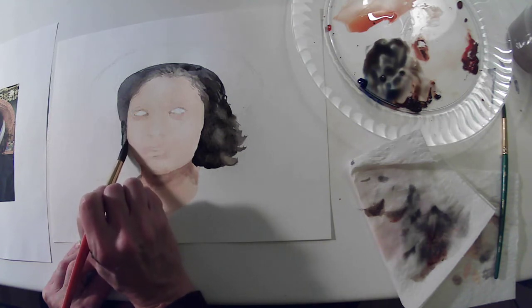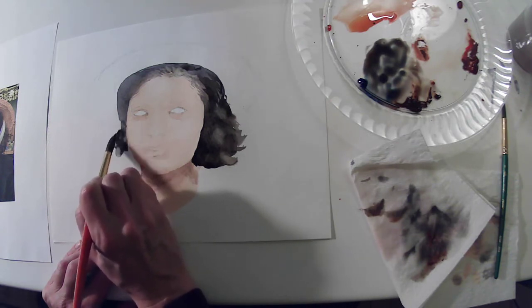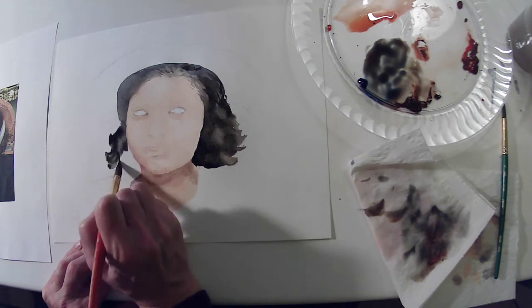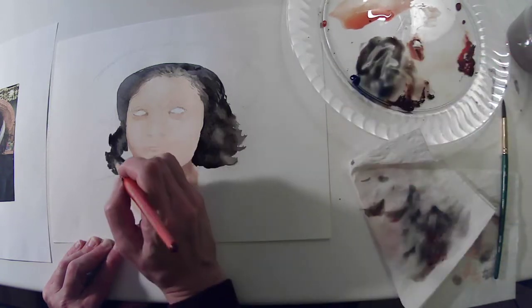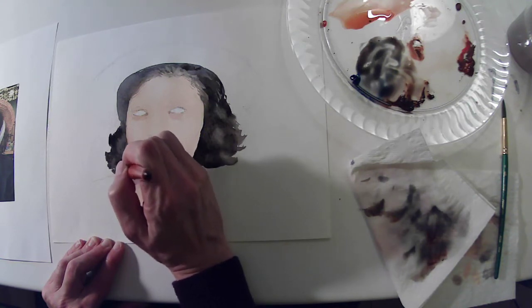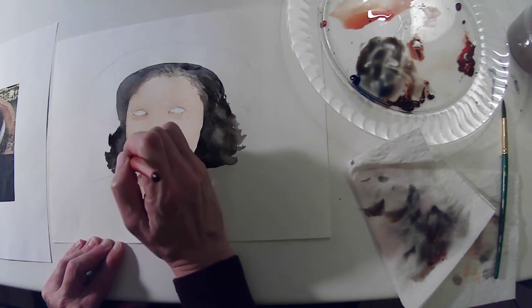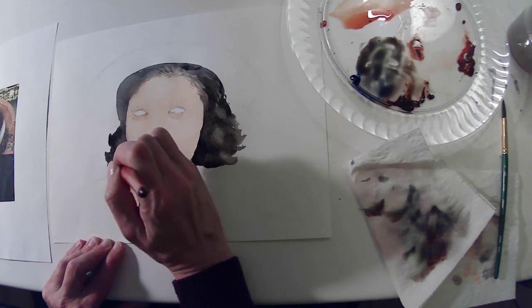So the hair kind of tucks back behind the cheek a little bit. This is where the white tulle would kind of pull the hair in a little bit, but I'm going to come back out with it again, ignoring the tulle overlapping the hair for now, because I'll address that when we come back to the white.